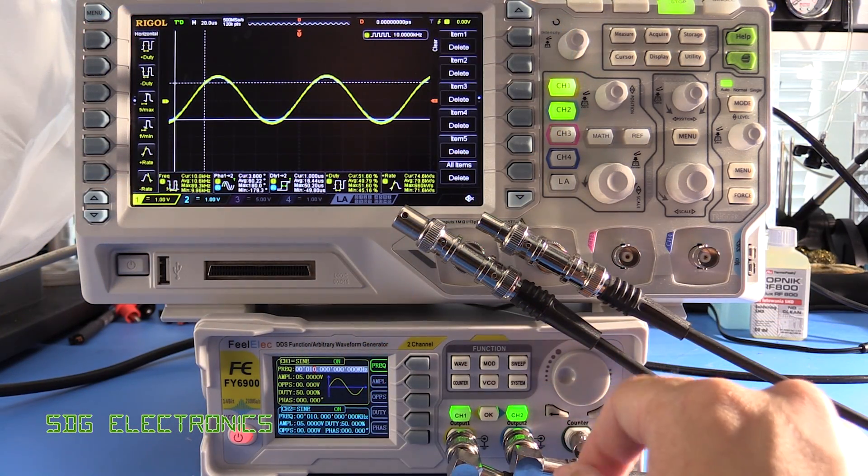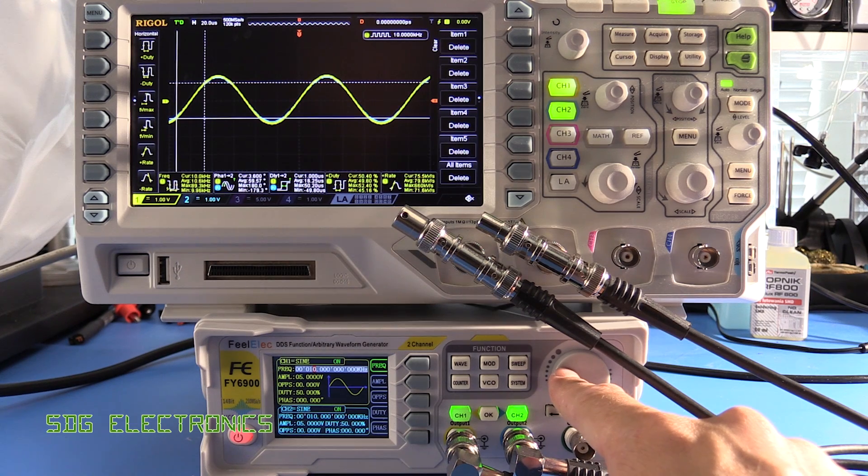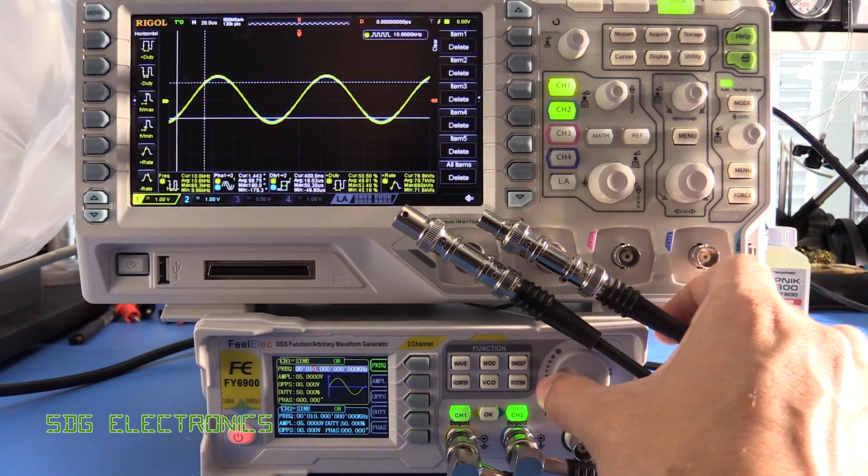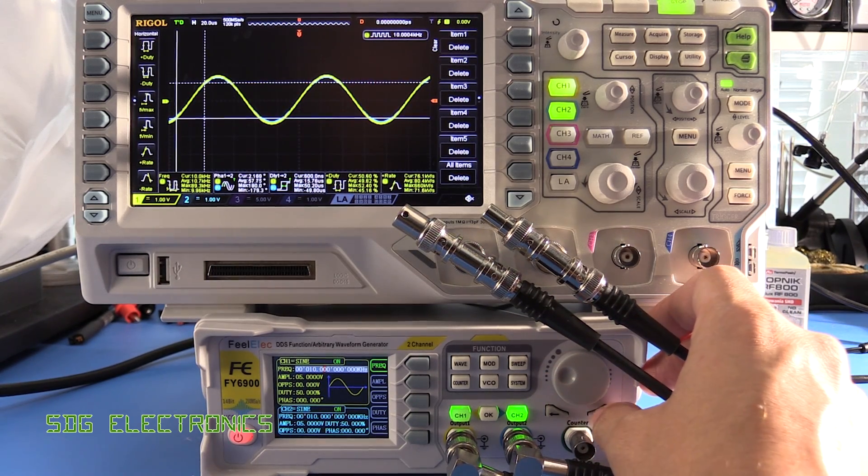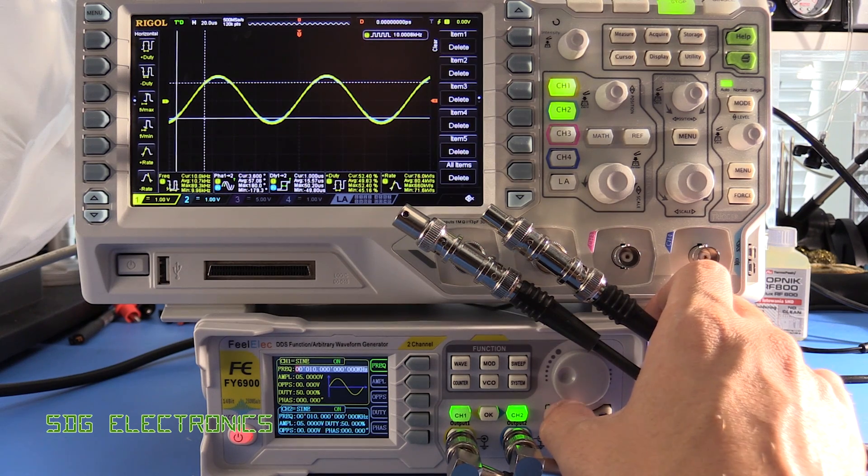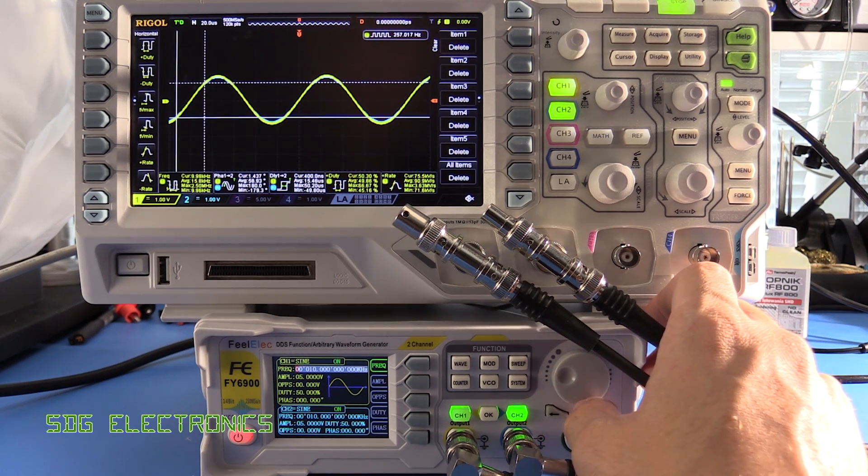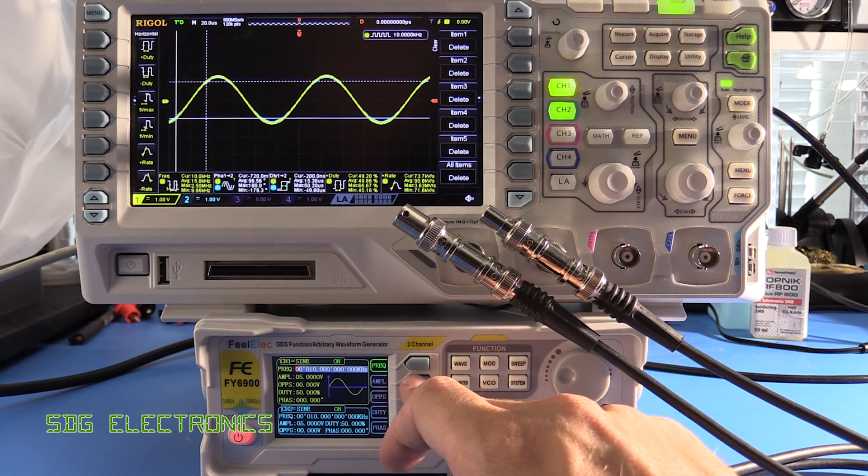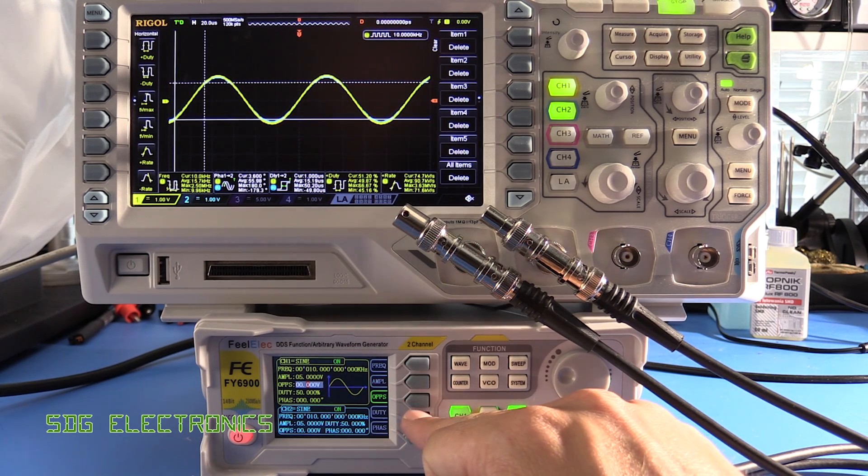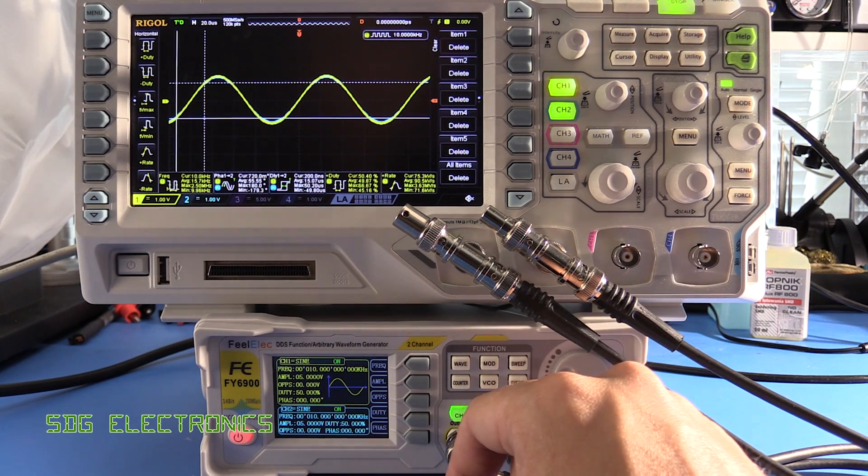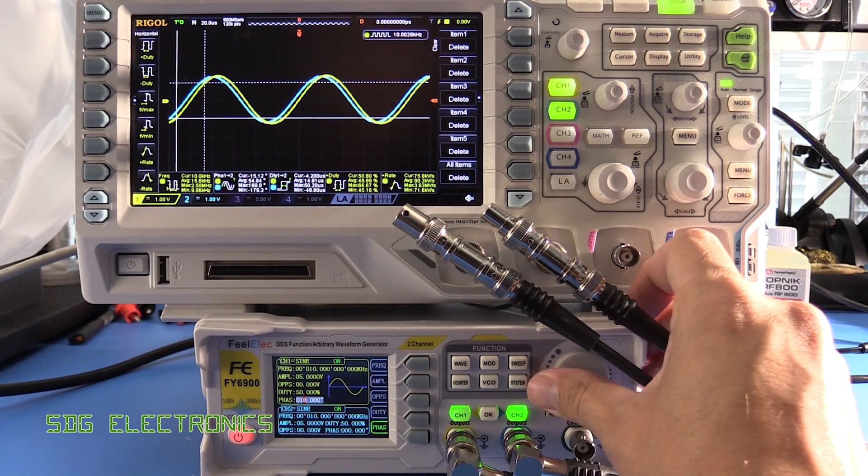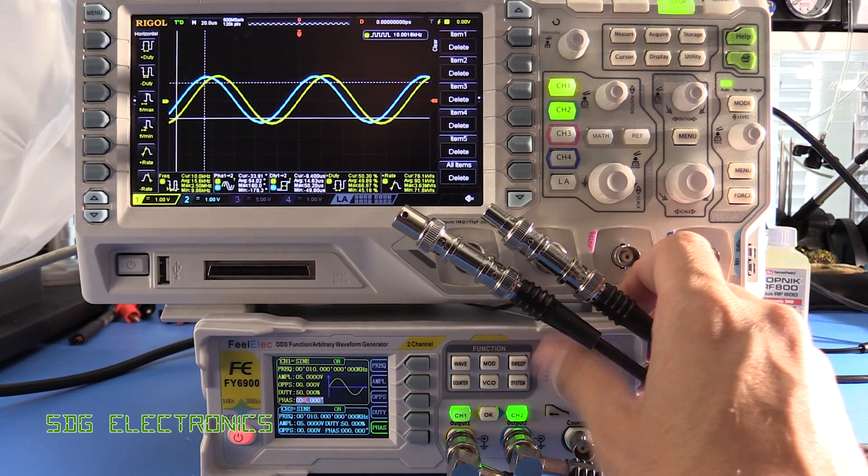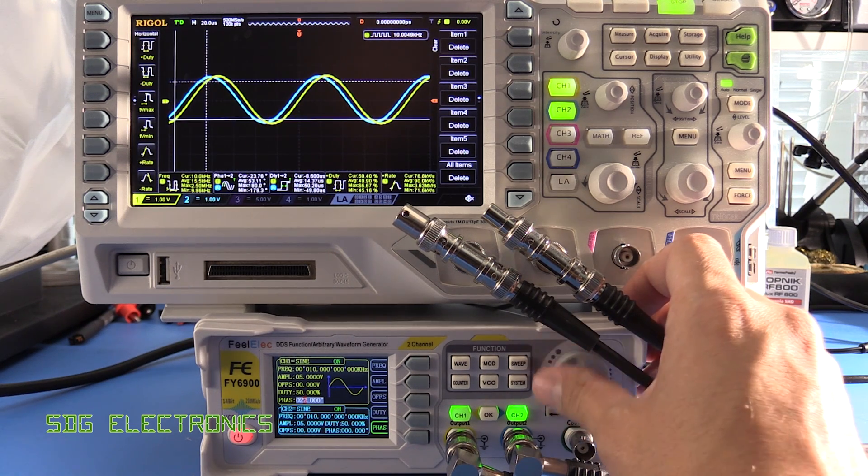The user interface on the device is not too bad actually. The knob is a little bit flimsy on the rotary encoder, but other than that it's pretty much fine. You can easily change the frequency and it does have the ability to move the cursor across with these left and right buttons so you can quickly do coarse or fine control. If you want to change the amplitude you can just press the button along here, offset, duty cycle, and then the phase. You can quickly adjust the phase between channel 1 and channel 2.